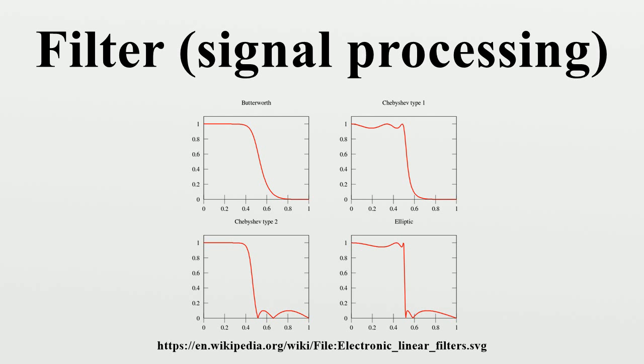Comb filter has multiple regularly spaced narrow pass bands giving the band form the appearance of a comb. All pass filter, all frequencies are passed, but the phase of the output is modified.